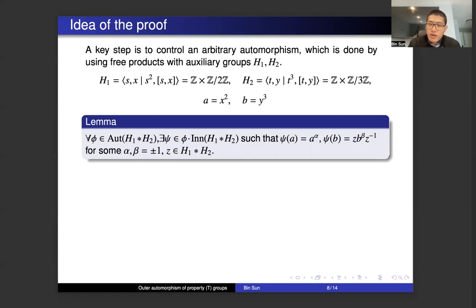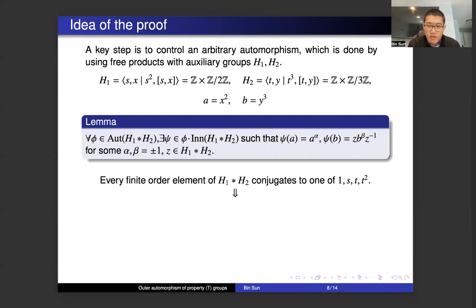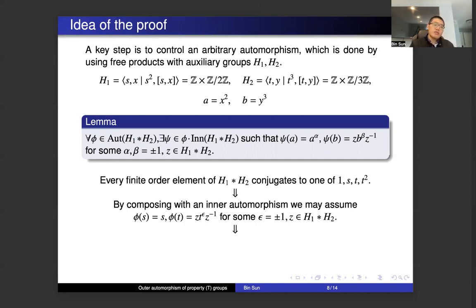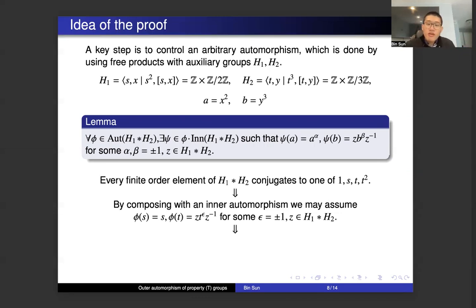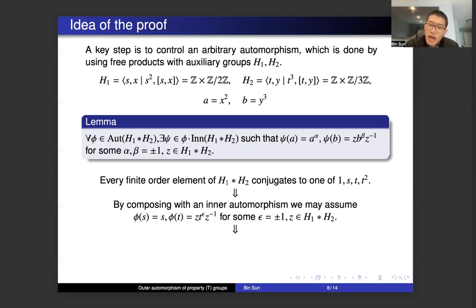To convince you about this observation, the argument is fairly simple. First, we notice that every finite order element of the free product conjugates to one of 1, s, t, and t squared. And since s has order two, phi has to map s to some other order-two element. So phi maps s to some conjugate of s. By conjugating everything using an inner automorphism, we may assume that phi maps s to itself, and phi maps t to t to some epsilon power conjugated by z or its inverse, where epsilon is plus or minus 1, and z is an element of the free product.